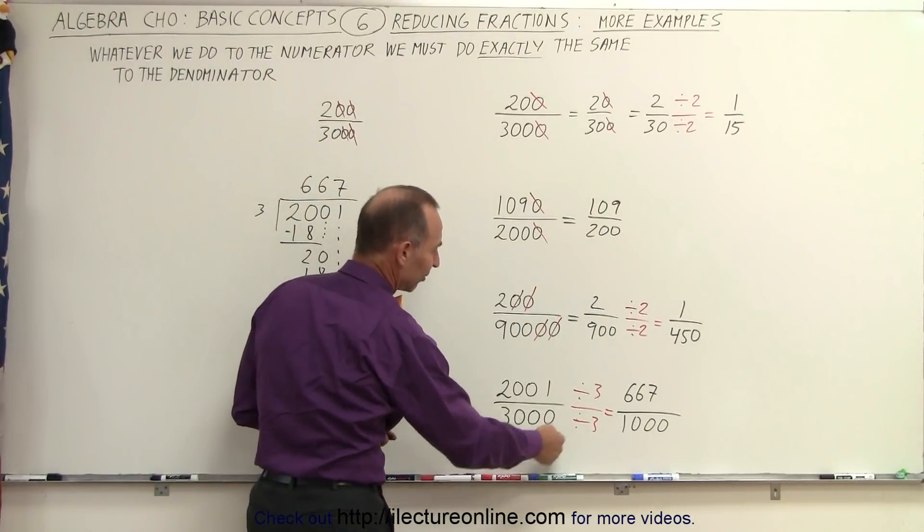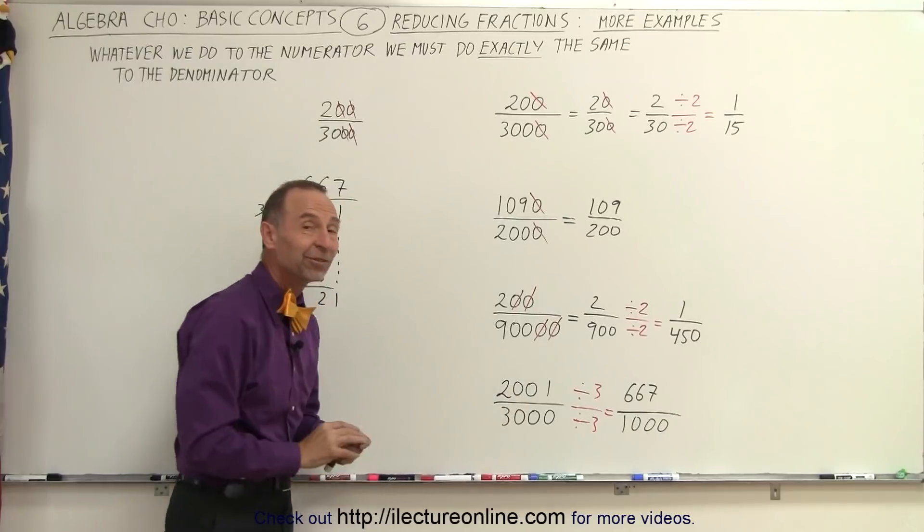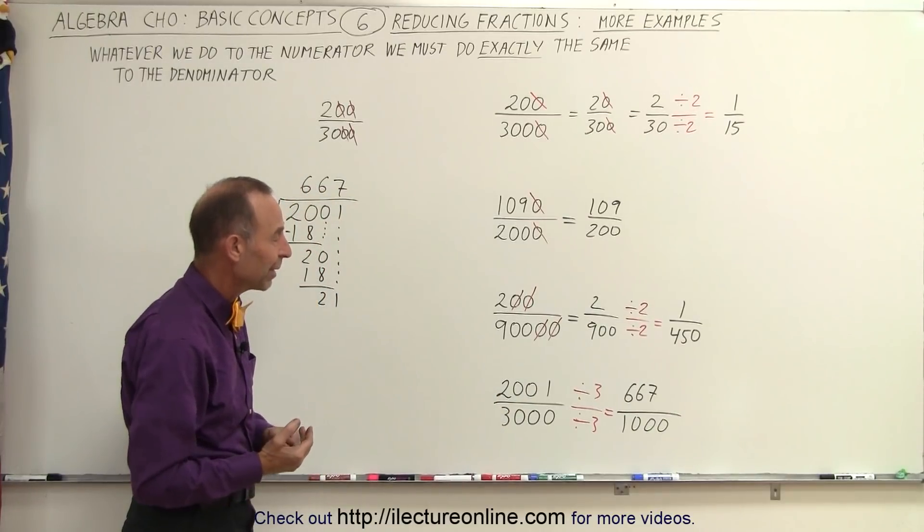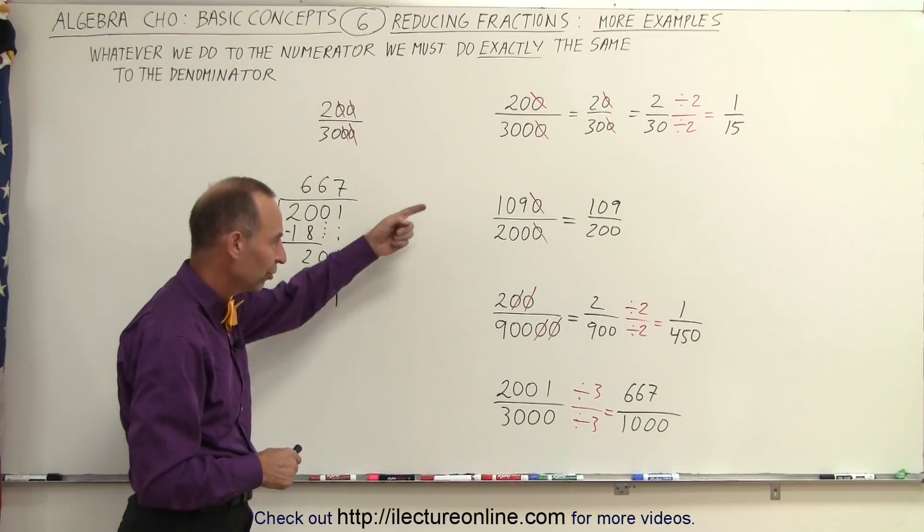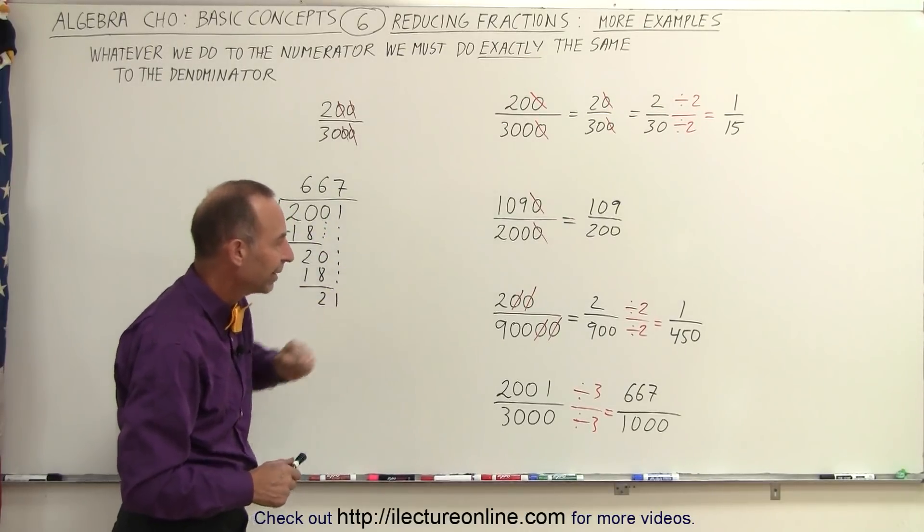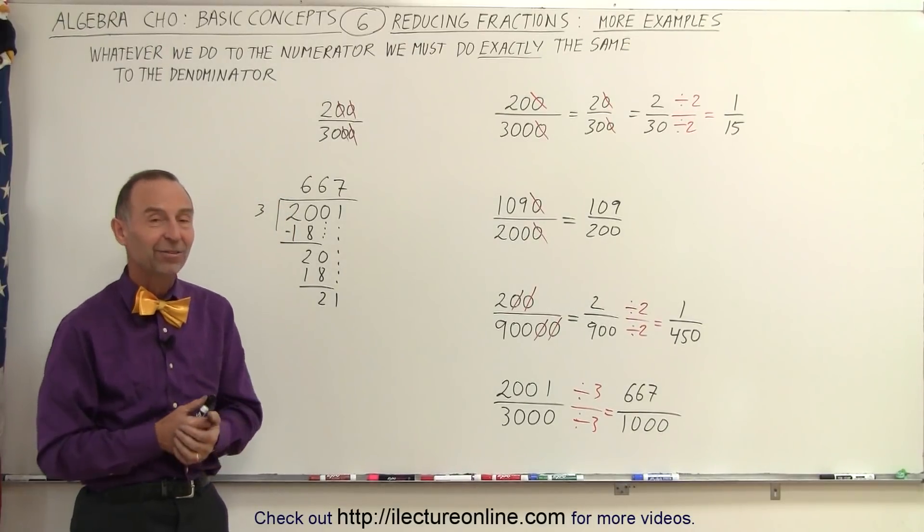And if you have something that's like this in the first place, you cannot even start, even though all those zeros are very tempting, you cannot divide by 10 and you have to look for other rules to try to reduce the fraction if possible. But notice the difference. Notice when you can divide by 10 and notice when you cannot divide by 10. And that's how it's done.